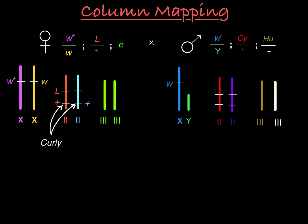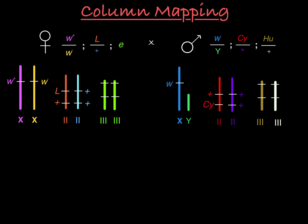So we will draw this chromosome as L with a plus placeholder for the curly wild type allele, and the homolog will have a wild type allele for lobe and a wild type allele for curly. We'll do the same thing for the male second chromosome. We know the male is homozygous wild type at the lobe gene and will include pluses as placeholders there, and we add in the curly mutant on one chromosome and curly wild type on the other. For the third chromosome, the female has two identical ebony mutant alleles, with wild type placeholders for the humeral gene. The male is heterozygous at humeral and homozygous wild type for ebony.